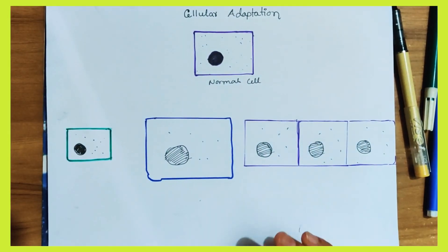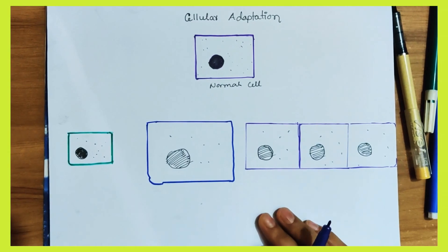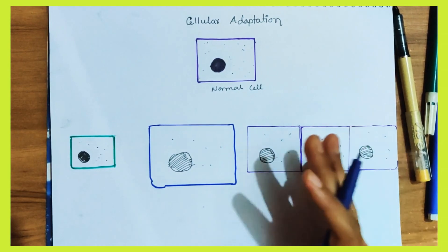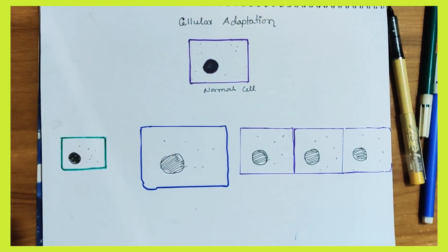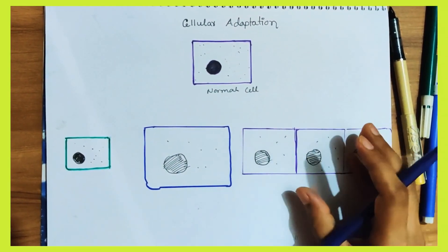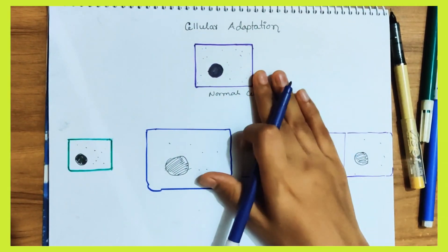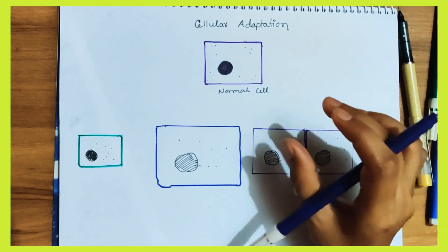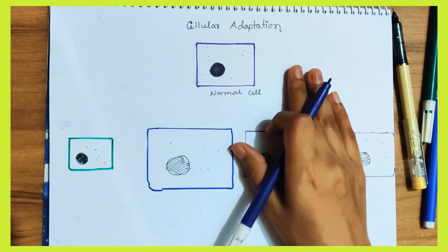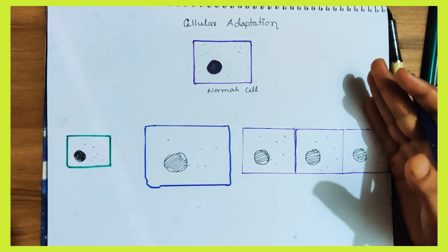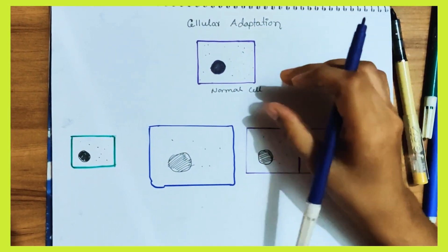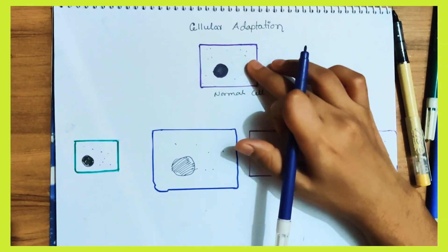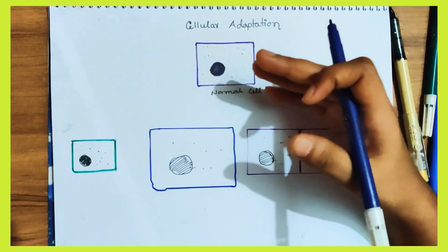Cellular adaptation — I am going to talk about the normal cell. Normal cells always try to maintain the same state, which is called homeostasis. Homeostasis is the internal environment, the steady state of the body.